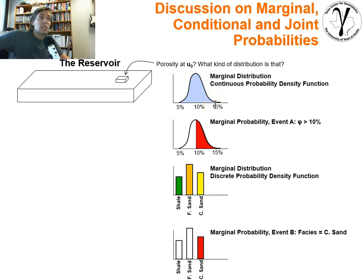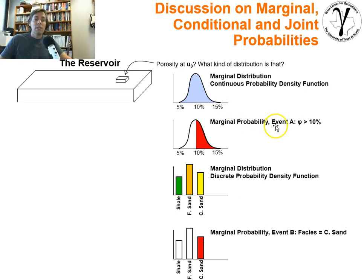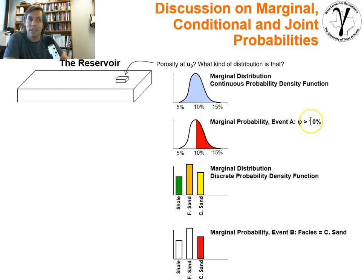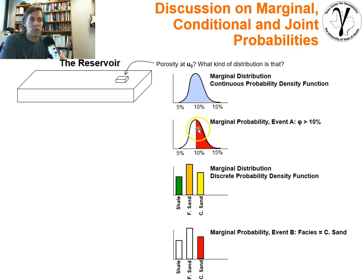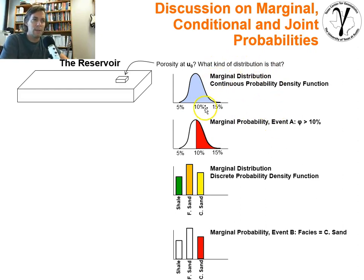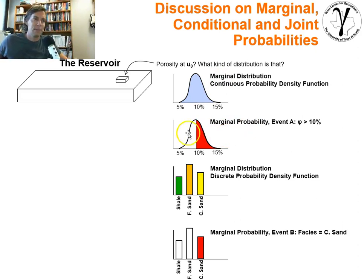Now, you could specify a specific event, such as the probability that porosity is greater than 10%. You could truncate that distribution, and now we're talking about a marginal probability from our marginal distribution. It would have some probability — maybe 55% or 60% — I'm guesstimating based on the relative area.